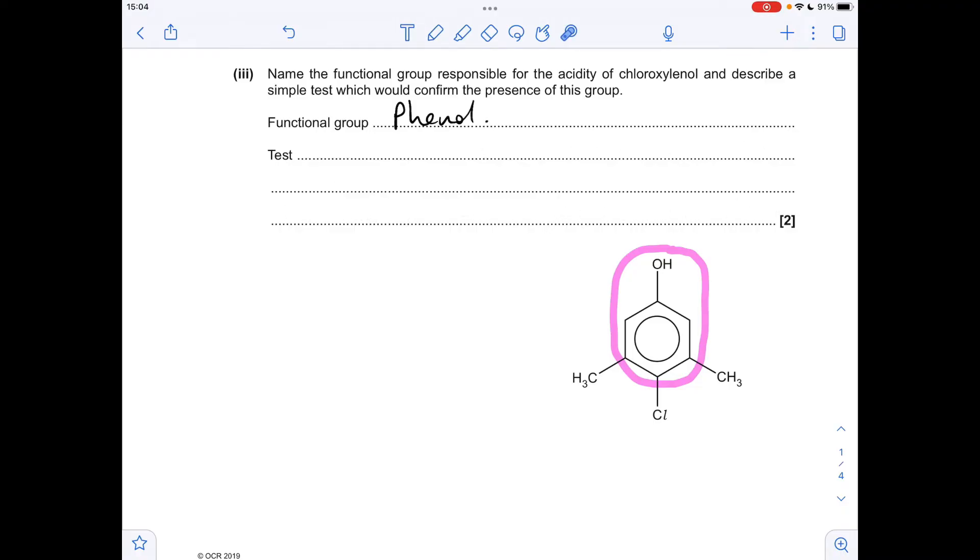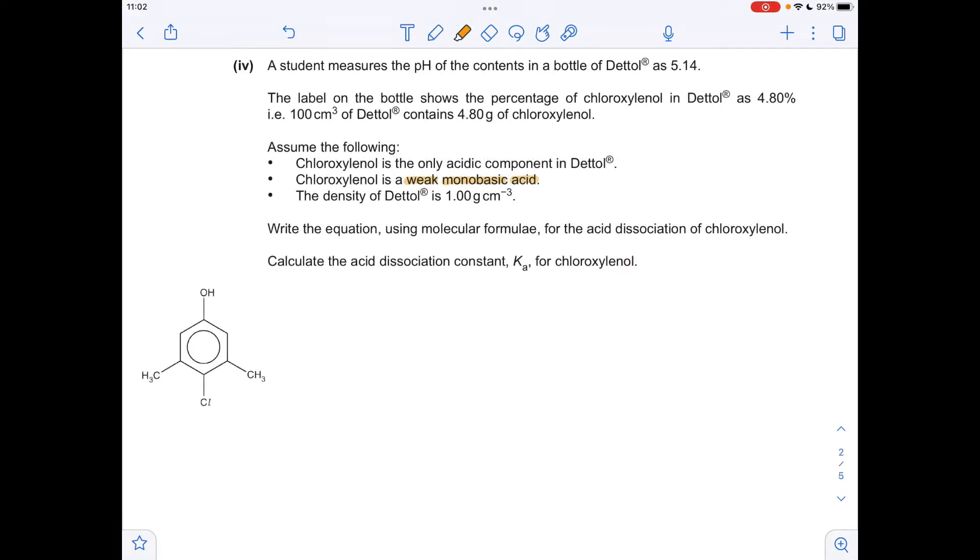Now, there is another way you could test for the phenol group. So if you added bromine to this molecule, it would decolourise the bromine, but it would also produce a white precipitate.